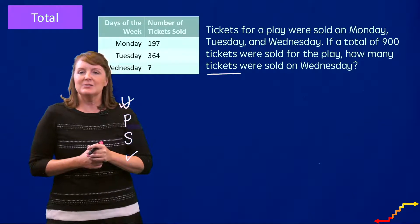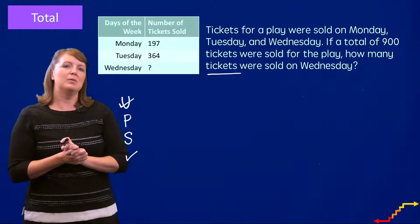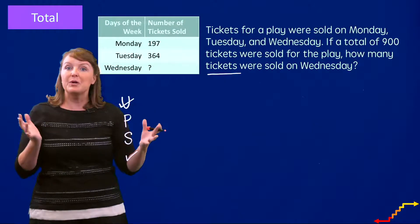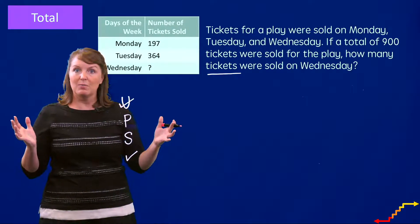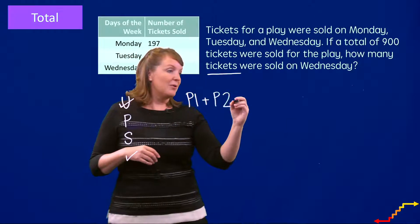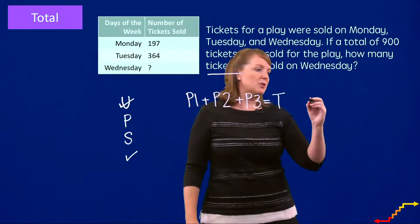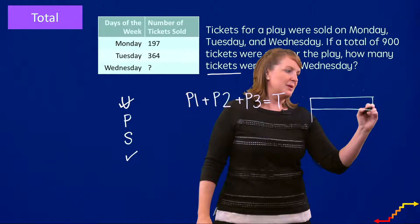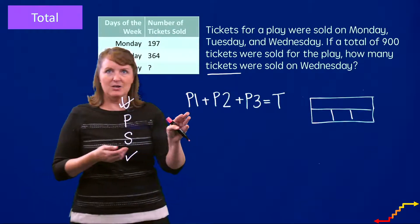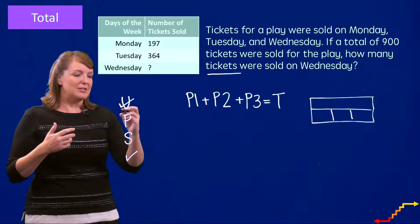Now we need to make a plan. Is this a total problem where parts are put together for a total? Yes, it is a total problem — but it's an unusual one because it doesn't have two parts. This is a total problem with three parts, and that's totally fine. Using our total equation, we can add a P3: P1 plus P2 plus P3 equals the total. You can also amend a graphic organizer to show three parts. It's very easy to extend the equation or graphic organizer to be a three-, four-, or even five-part total problem.